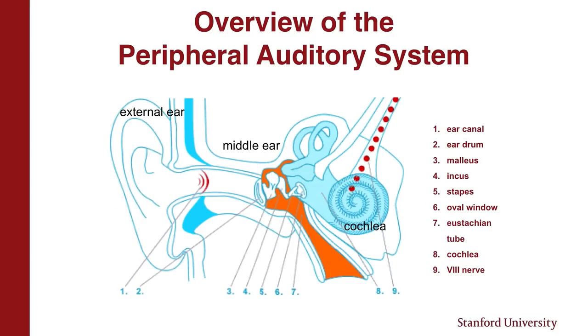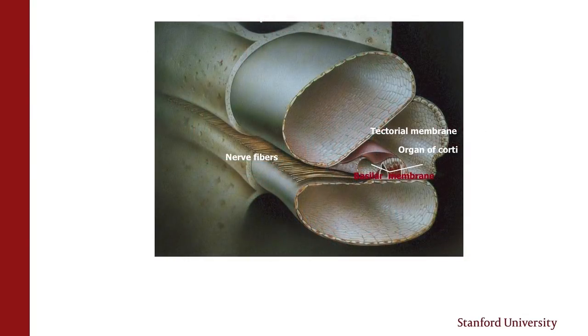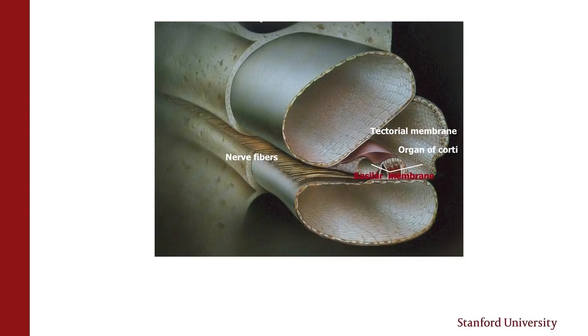If we zoom into the cochlea and image it out, this is actually like little tiny chambers inside your bone — inside this temporal bone. There are three little chambers: the scala vestibuli and scala tympani, which are basically just filled with a water-like substance. But inside the middle one — the scala media — that's where all the cells for hearing take place. When we think of hearing, most of what we think of is action going on in there.